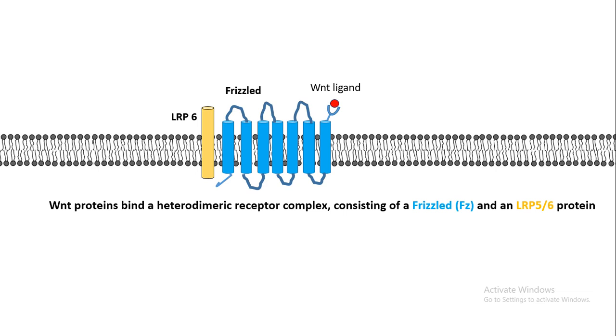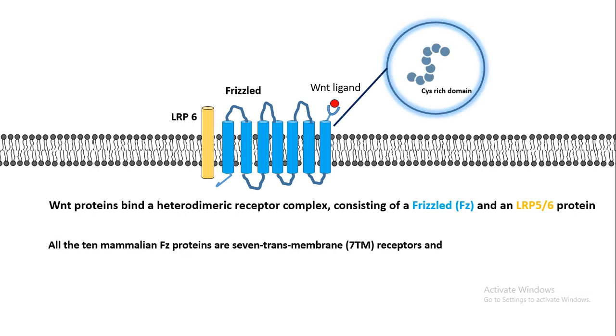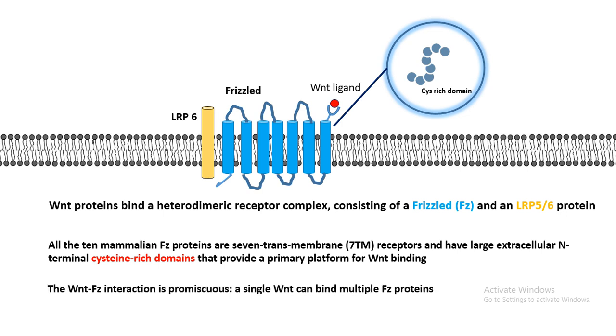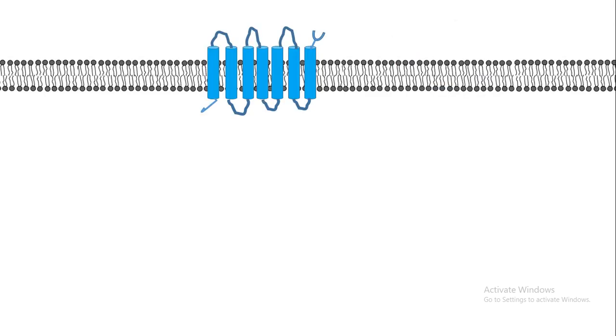The key component of the WNT signaling pathway is the WNT ligand. WNT proteins bind to a homodimeric receptor complex consisting of Frizzled and LRP5 or 6. All 10 mammalian Frizzled receptors have seven transmembrane domains and have a large extracellular N-terminal cysteine-rich domain which helps in binding the WNT molecule. The WNT-Frizzled interaction is pretty promiscuous, meaning a single WNT ligand can bind to various Frizzled proteins.